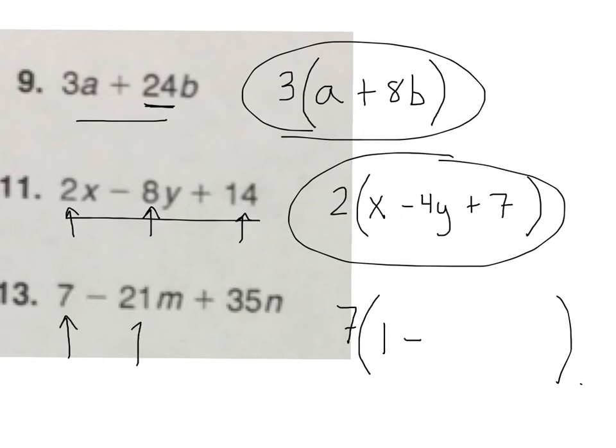Minus. Now, I factored seven out of 21, what did I end up with? When you factor seven out of 21, what is it? Negative three M. And then I factored seven out of 35, and what do I get? Plus five M.